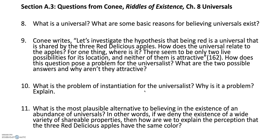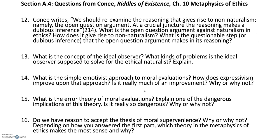Let's move on to section A4. Here we have five questions from the chapter on the metaphysics of ethics by Connie. The first also has a direct quotation. Connie writes in question 12: 'We should re-examine the reasoning that gives rise to non-naturalism, namely the open question argument. At a crucial juncture, the reasoning makes a dubious inference.' That's from page 214. My question is: What is the open question argument against naturalism in ethics? How does it give rise to non-naturalism? What is the questionable step, or dubious inference, that the open question argument makes in its reasoning? There are four other questions in this section.